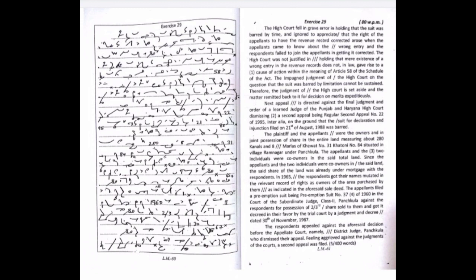The appellants and the two individuals were co-owners in the said total land. Since the appellants and the two individuals were co-owners in the said land, the said share of the land was already under mortgage with the respondents. In 1965, the respondents got their names mutated in the relevant record of rights as owners of the area purchased by them as indicated in the aforesaid sale deed.